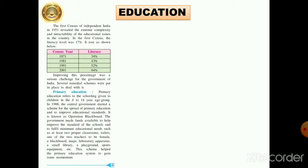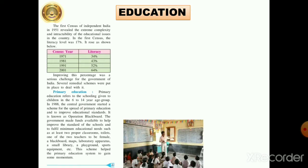Let's see what schemes were put up by the government. The very first is primary education. Primary education refers to the schooling given to children in the 6 to 14 years age group. In 1998, the central government started a scheme for the spread of primary education and to improve educational standards, and this scheme is known as Operation Blackboard.